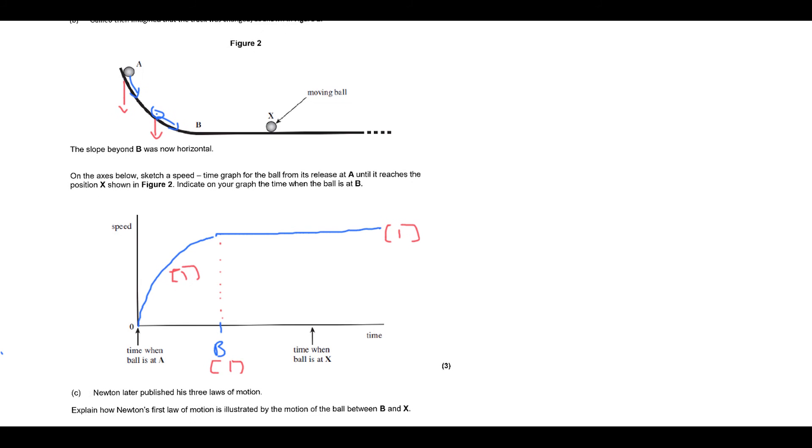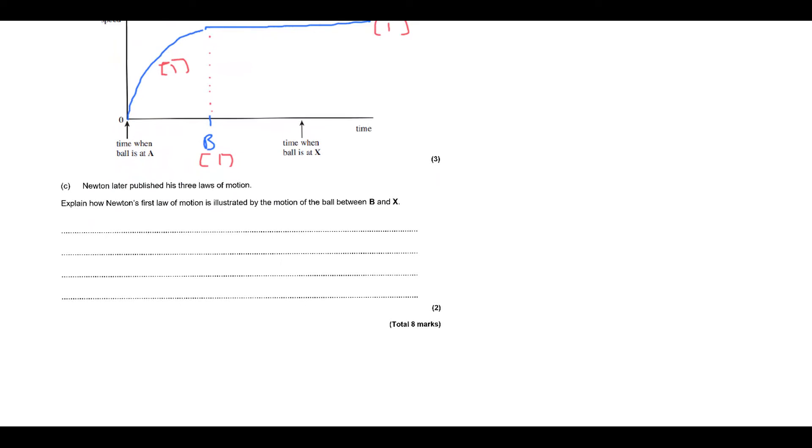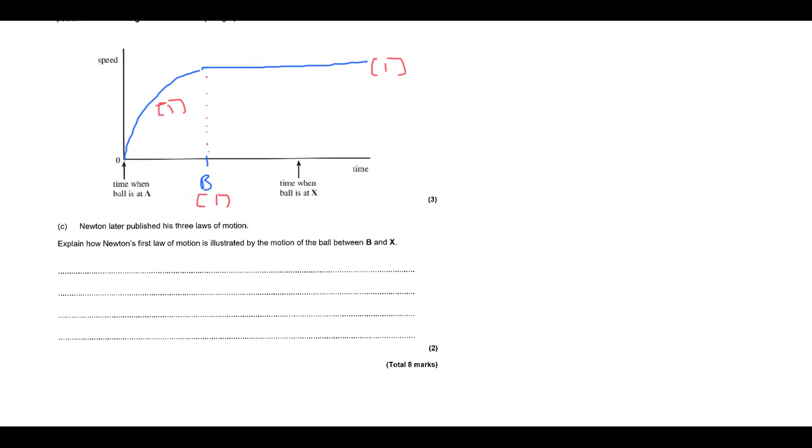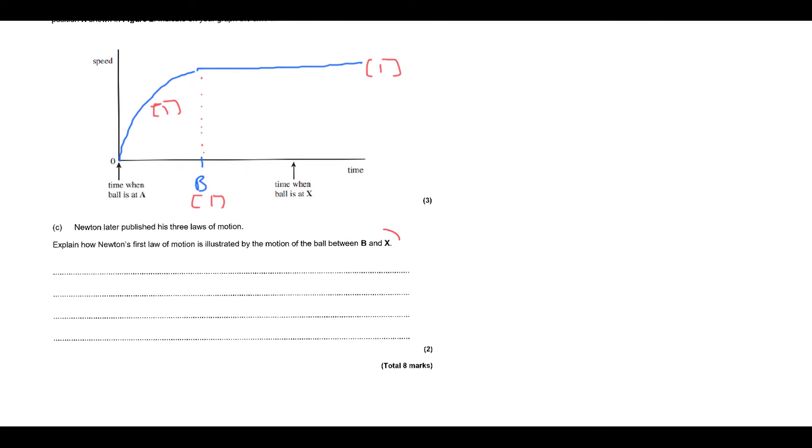Okay, so then Newton later published his three laws of motion. Explain how Newton's first law of motion is illustrated by the motion of the ball between B and X and I imagine a lot of people who did this question will have ignored this so be very careful when you're reading the question.